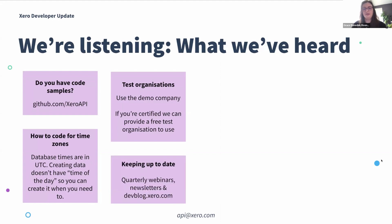The other thing is where to keep up to date with stuff. We do have these quarterly webinars, which we upload to YouTube. We have a newsletter that goes out every month as well. And we do have a developer blog, devblog.xero.com, where we are posting a load of different information. All of those blog posts tend to go into the monthly newsletter as well, so that's a good place to keep up to date.